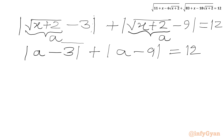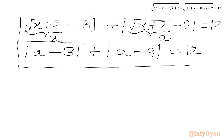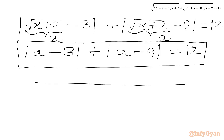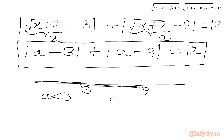Now we have to solve this absolute value equation. I will draw a number line showing our critical points 3 and 9. We can split our domain into three intervals: first when a is less than 3, second when a is between 3 and 9, and third when a is greater than or equal to 9.